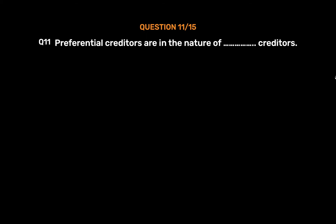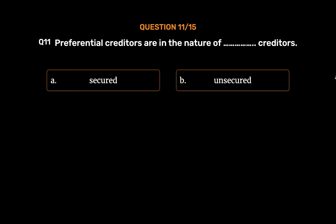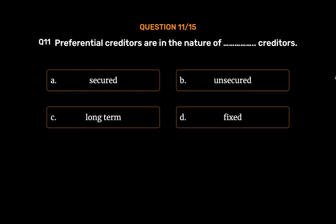Question number 11. Preferential creditors are in the nature of which type of Creditors? Option A: Secured. Option B: Unsecured. Option C: Long term. Option D: Fixed. The correct answer is Option B — Unsecured.